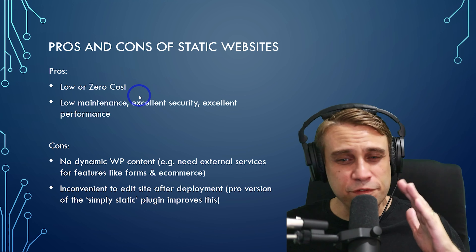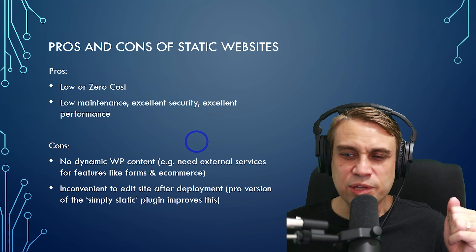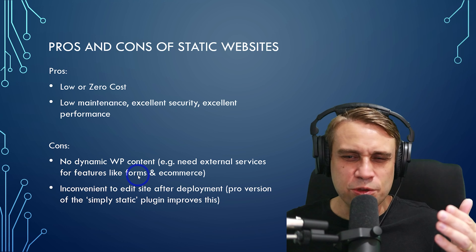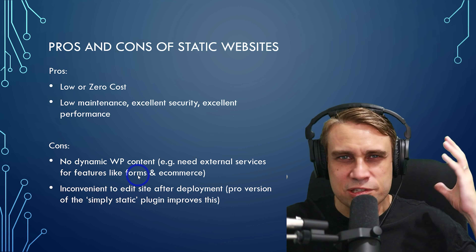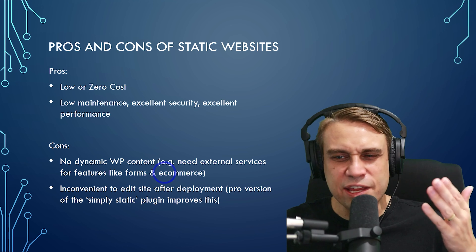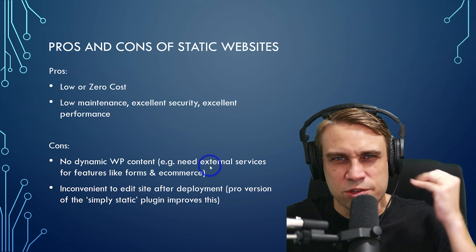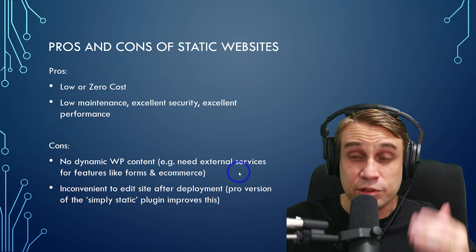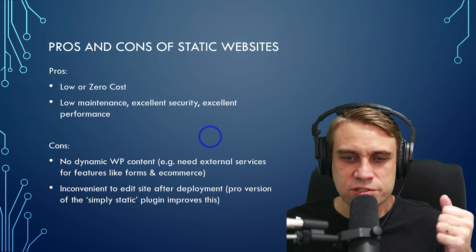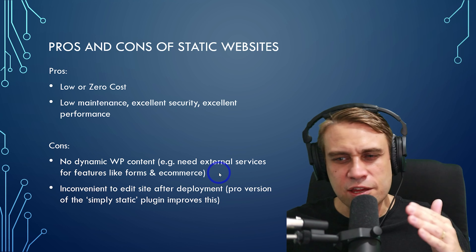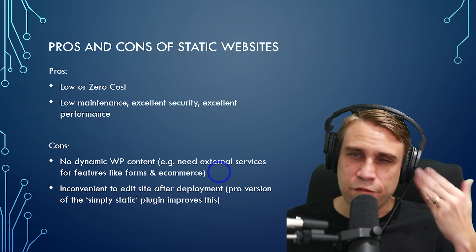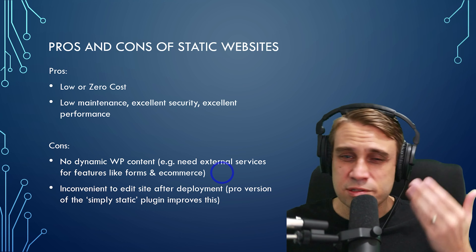Obviously you've lost all your dynamic WordPress features. If you want to have dynamic features, you need to connect them to an external service like forms and e-commerce. You need a form service like Google Forms or JotForm, and for e-commerce something like Snipcart or Square or PayPal buttons. Those kinds of things can be used to replace something like WooCommerce in a lot of situations.